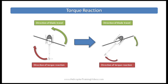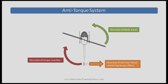So in a traditional or conventional helicopter system, the way this is countered is with something called an anti-torque system, or a tail rotor in this case. The tail rotor is producing thrust which opposes the direction of the torque reaction. We have the blades spinning counterclockwise when viewed from above, shown by the green arrow. The body of the helicopter wants to move in the opposite direction, shown by the red arrow, but is countered by the thrust produced by the tail rotor.